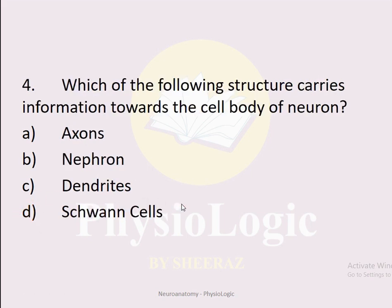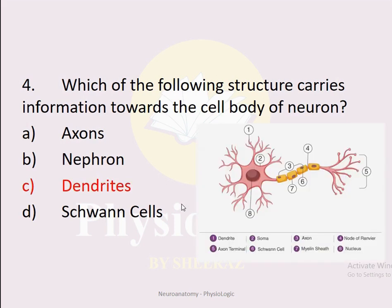MCQ number four: Which of the following structures carries information towards the cell body of the neuron? Option A: axons. Option B: nephron. Option C: dendrites. Option D: Schwann cells. The correct option is C: dendrites. Dendrites carry information towards the cell body and axons take information away from the cell body or soma.